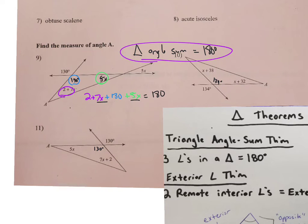So, 7x and 5x is 12x. 2 and 130 is 132. So, now I'm just going to solve. Remember, it equals 180. So, I have, I'm going to minus 132 from both sides. I end up with 2x equals 48. And now I divide both sides by 2. 2x equals 24.